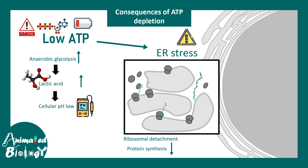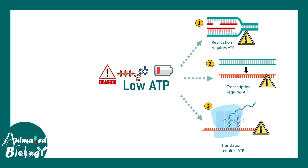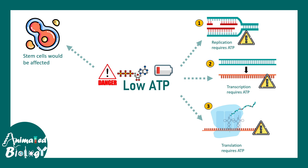Any cellular process you might think of would be abrogated when ATP levels are low. Central dogma processes — replication, transcription, translation — would never happen without enough ATP. Cells wouldn't even consider dividing with low ATP levels. Stem cells, which must divide continuously to produce and regenerate new cells, would stop dividing entirely.